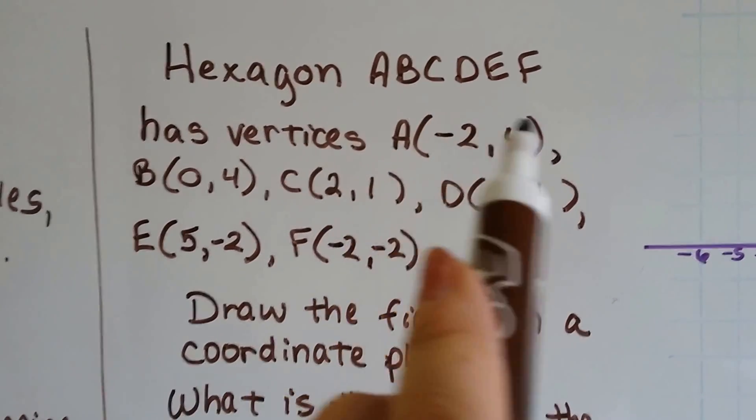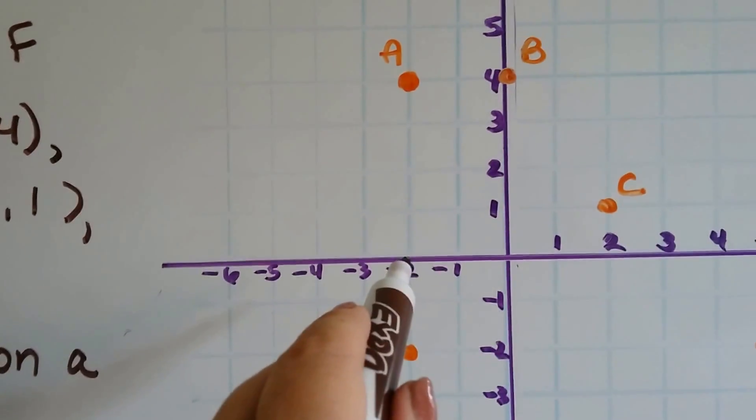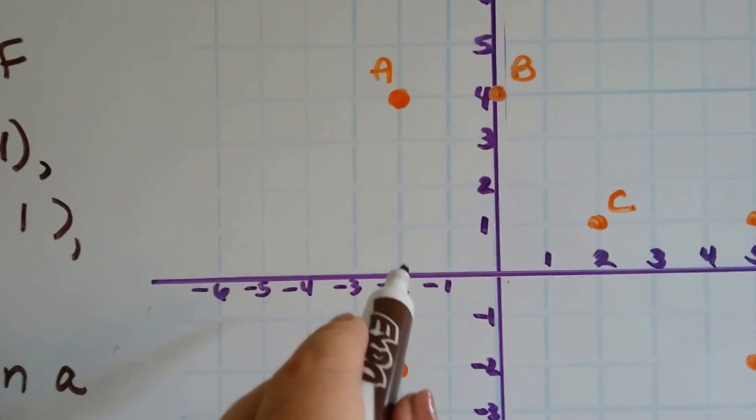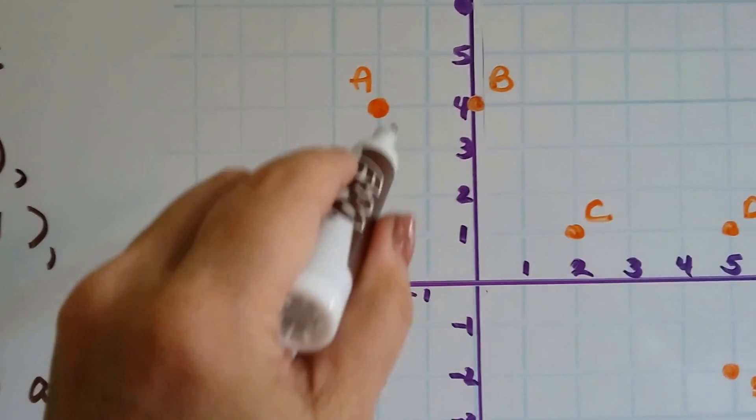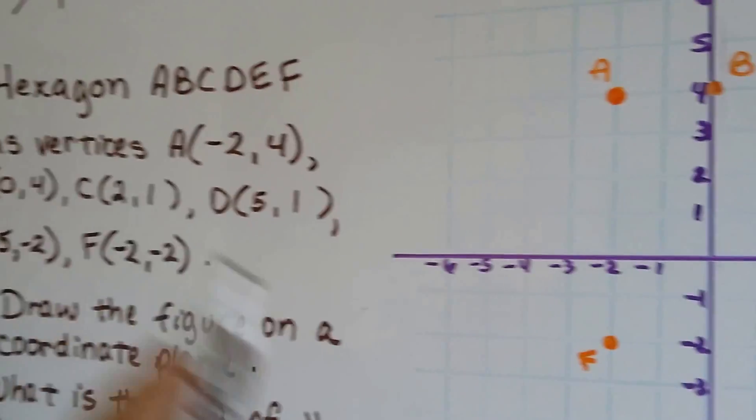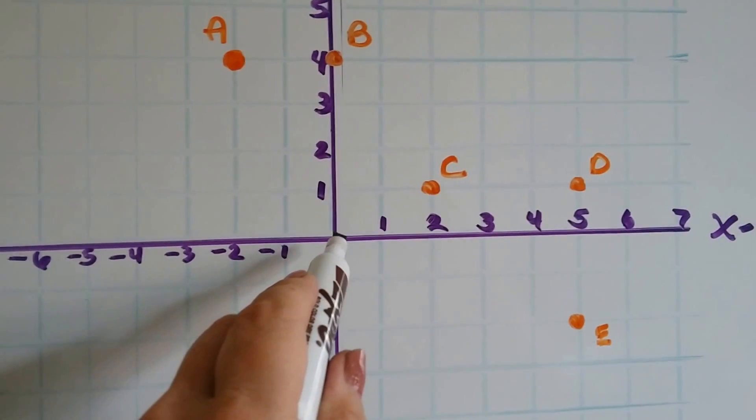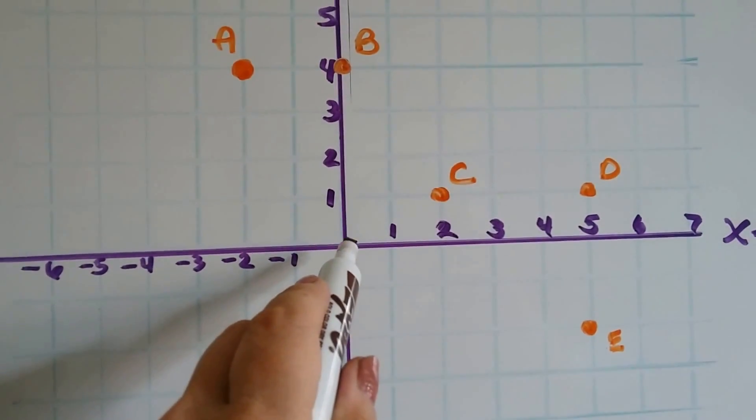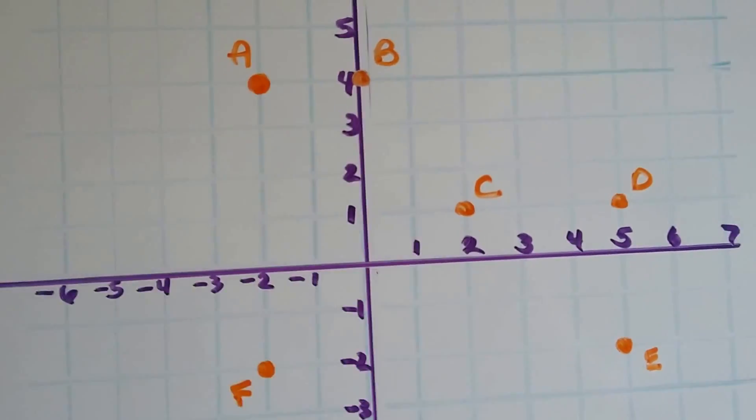So, A is (-2, 4). So, x is going to be -2, and then it's going to be 4 for y, which means it's right there. We got to the -2 on the x, and then we went up to 4, and where they meet, that's where A is. B is (0, 4), so it's 0 on the x, that's 0 right here in the middle of the origin, and 4 on the y, which means it's right here. So, it went from 0 all the way up to 4, and that's where the two points meet.